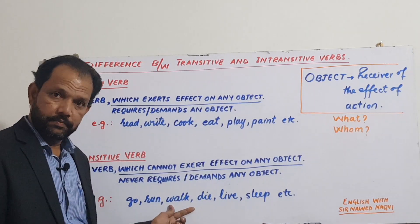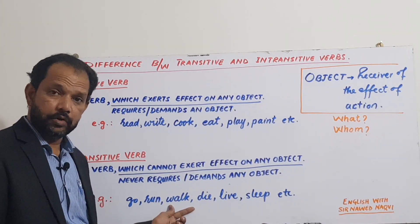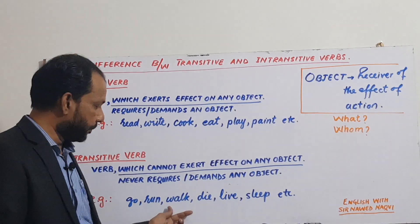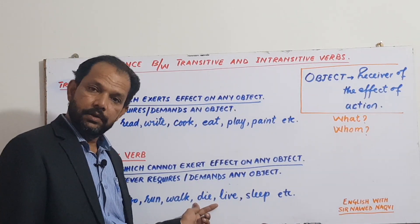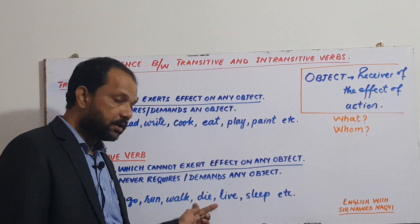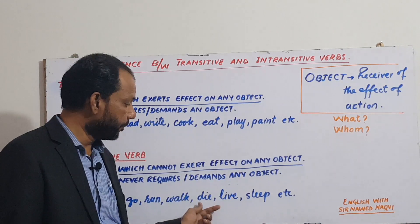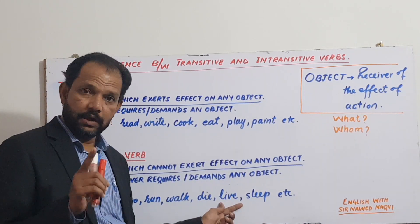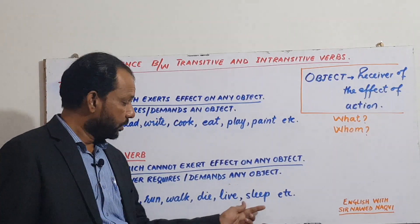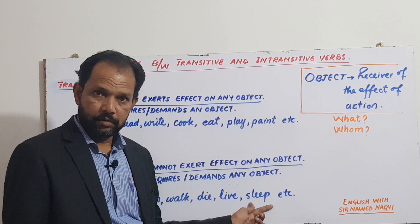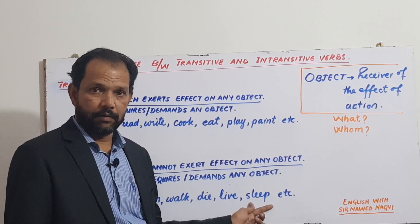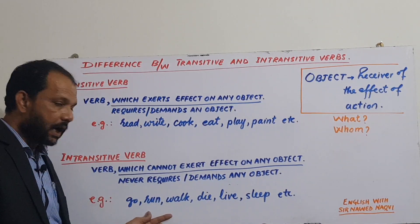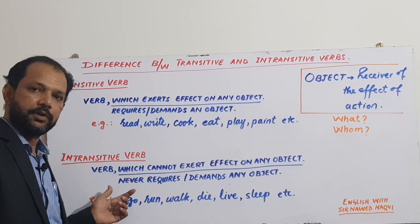Walk - they walked. What? What का कोई answer possible नहीं है। Whom? का भी कोई answer possible नहीں है। He died - what? What का कोई answer possible नहीں है। Whom? का भी नہیں۔ We live - where का answer possible ہے، لیکن what یا whom کا answer possible ہی نہیں ہے۔ Sleep - she slept: what کا کوئی answer possible ہے never، whom کا کوئی answer possible ہے never۔ تو جب what یا whom کا answer possible نہ ہو، ایسے action verb کو intransitive verb کہتے ہیں۔